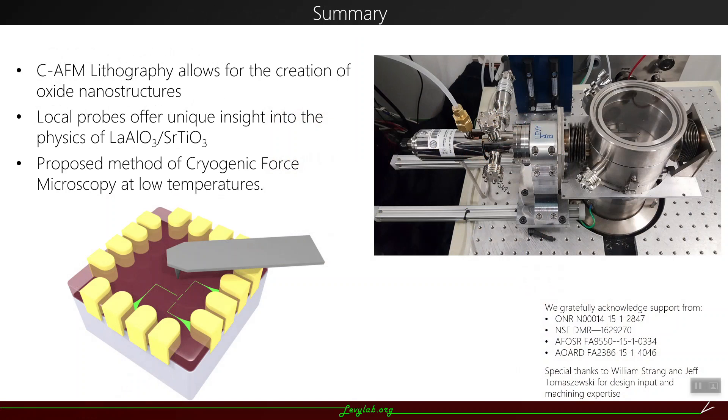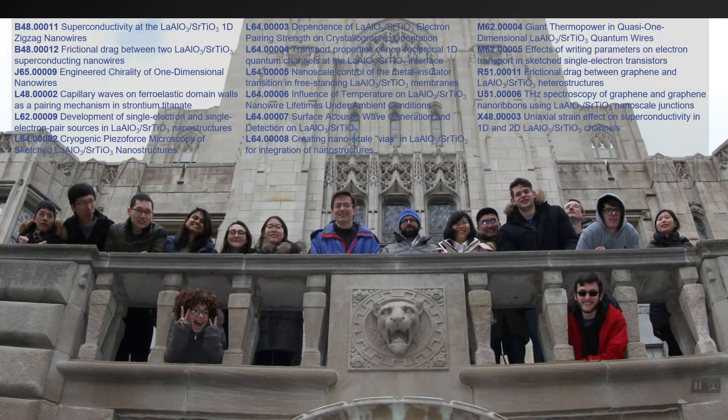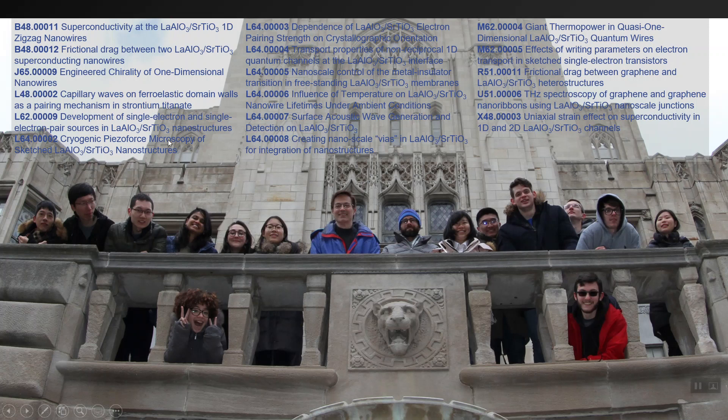In summary, conductive AFM lithography allows for the creation of oxide nanostructures. This technique of using local probes could offer unique insight into the physics behind the properties of lanthanum aluminate strontium titanate. I also proposed a method of cryogenic force microscopy at low temperatures using a modified vacuum atomic force microscope. March meeting was cancelled, but here's a list of the talks from our group. You can find them on levylab.org or on their respective APS March meeting abstract websites. Thank you for watching.